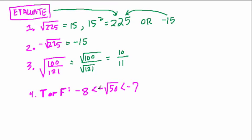In the last problem, they're asking us, if you take the square root of 50 and then multiply it by negative 1, is that bigger than negative 8 and is it less than negative 7? Is that true or false? Well, here's how we can figure it out.